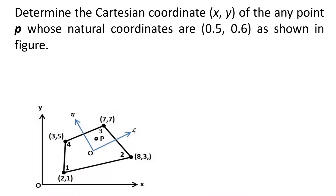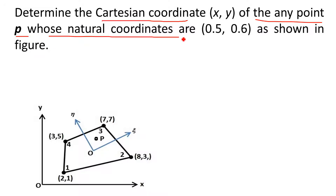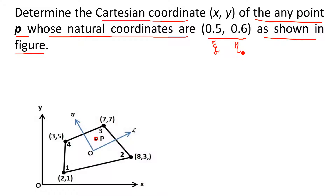The statement of the example is: determine the Cartesian coordinates of any point P whose natural coordinates are 0.5 and 0.6, as shown in figure. In the figure, one quadrilateral is given with one point P shown. Natural coordinates of point P are given: 0.5 is the xi coordinate and 0.6 is the eta coordinate. The question is to find out the Cartesian coordinates x and y of this point P.